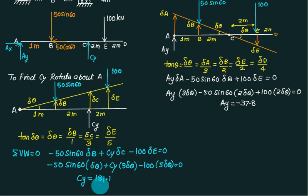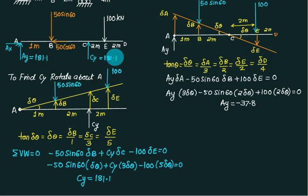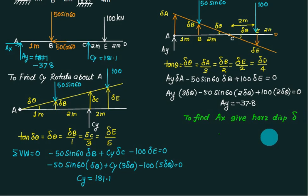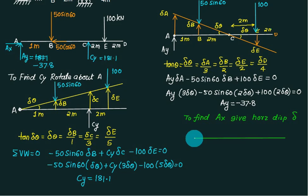C_Y equals 181.1. We will confirm whether our answer is correct from the figure. If we put this value as 181.1 and this value as 181.1, and we have A_Y equal to minus 37.8 — check this sum: this minus this plus this minus this. Is it 0? Now to find A_X, give a horizontal displacement. This is your beam.